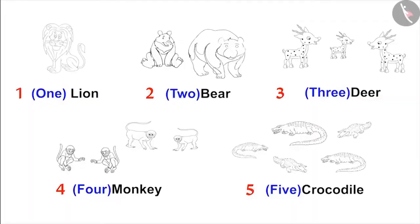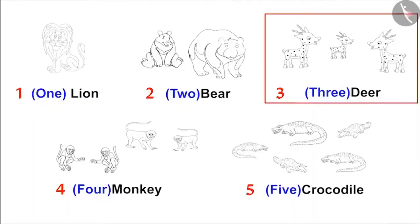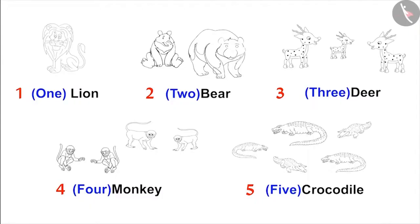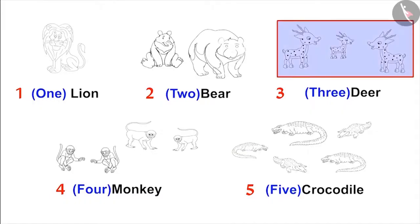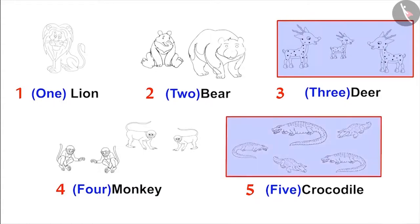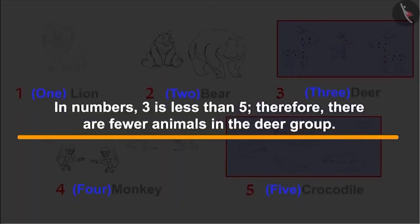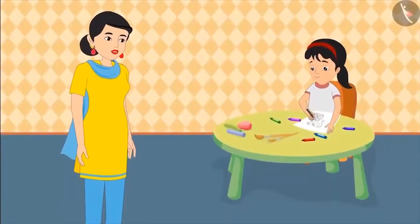Very good Pinkie. Now tell me, are there fewer animals in the deer group or in the crocodile group? There are three animals in the deer group and five animals in the crocodile group. Amongst numbers, three is less than five. Therefore, there are fewer animals in the deer group. Very good, Pinkie.